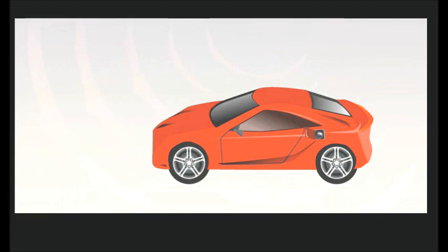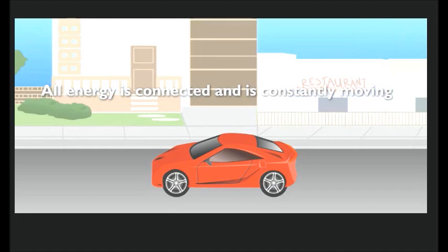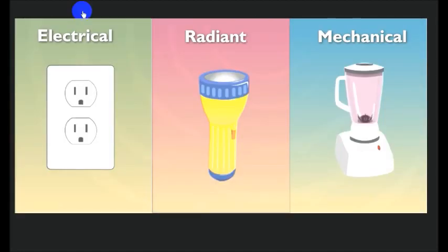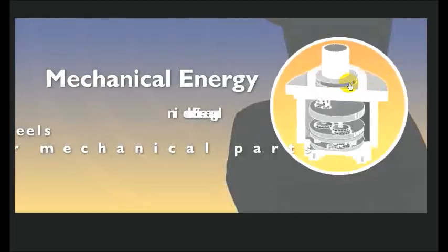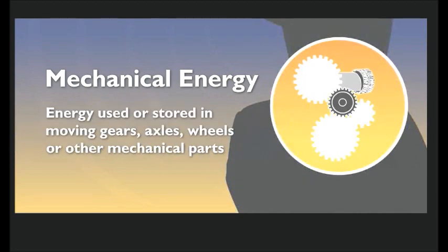Seems like some types of energy are connected. All energy is connected — it just keeps moving from place to place. Electrical energy is the movement of electrons, and it can be transferred into both radiant and mechanical energy. Radiant energy is light from the sun or any other light source. Electric motors transfer electrical energy into mechanical energy, which can be potential energy waiting to be used, or kinetic energy when the parts are in motion.